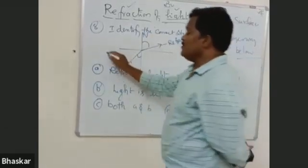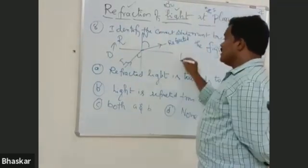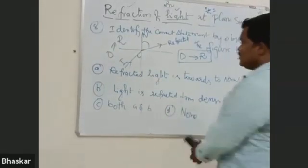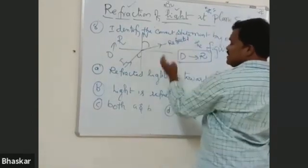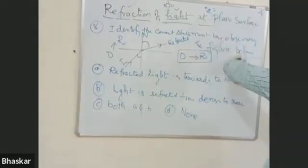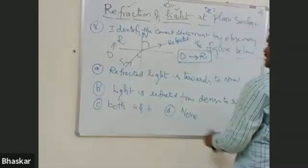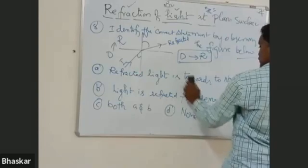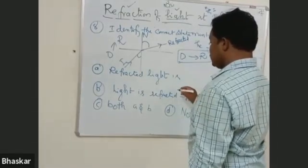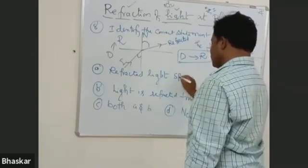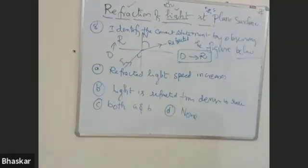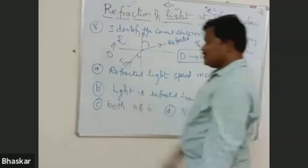Traveling from denser to rarer. Okay D to R, denser to rarer. Possibility on the right. So it is going away from the normal because the speed of the light increases. So the refracted light, refracted light speed increases. So your answer is option C sir.